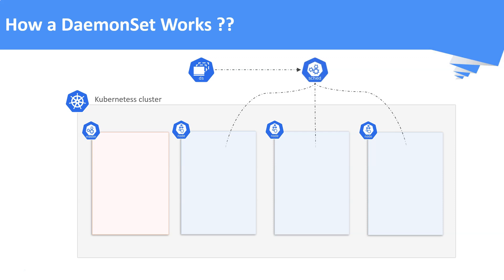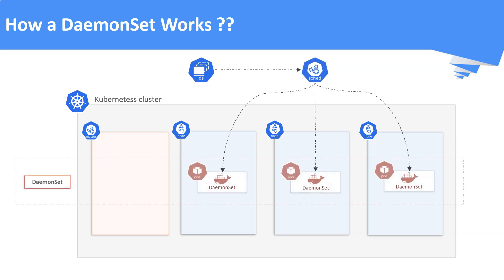Whenever a DaemonSet object is created, it is the default scheduler that creates the relevant pods in each node. As highlighted earlier, a DaemonSet is not scheduled in the master node because a restriction called taints is applied to the master node, preventing pods from being scheduled there. DaemonSet respects taints and tolerations — we will discuss taints and tolerations in a separate video in more detail.